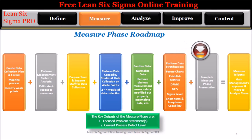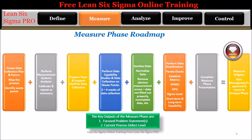Step 7: Complete the measure phase presentation. Step 8: Measure tollgate — gain management's approval and move to the analyze phase. The key outputs of the measure phase are: 1. Focused problem statements, and 2. Current process defect level.